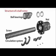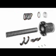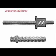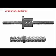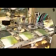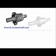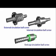Ball screws are composed of screws, nuts, a recirculation system, and ball bearings. They are low friction transmission elements that can be used to convert rotational motion to linear motion, or to convert torque to axial reciprocating action. There are three types of ball screws, which differ in how their ball bearings circulate.